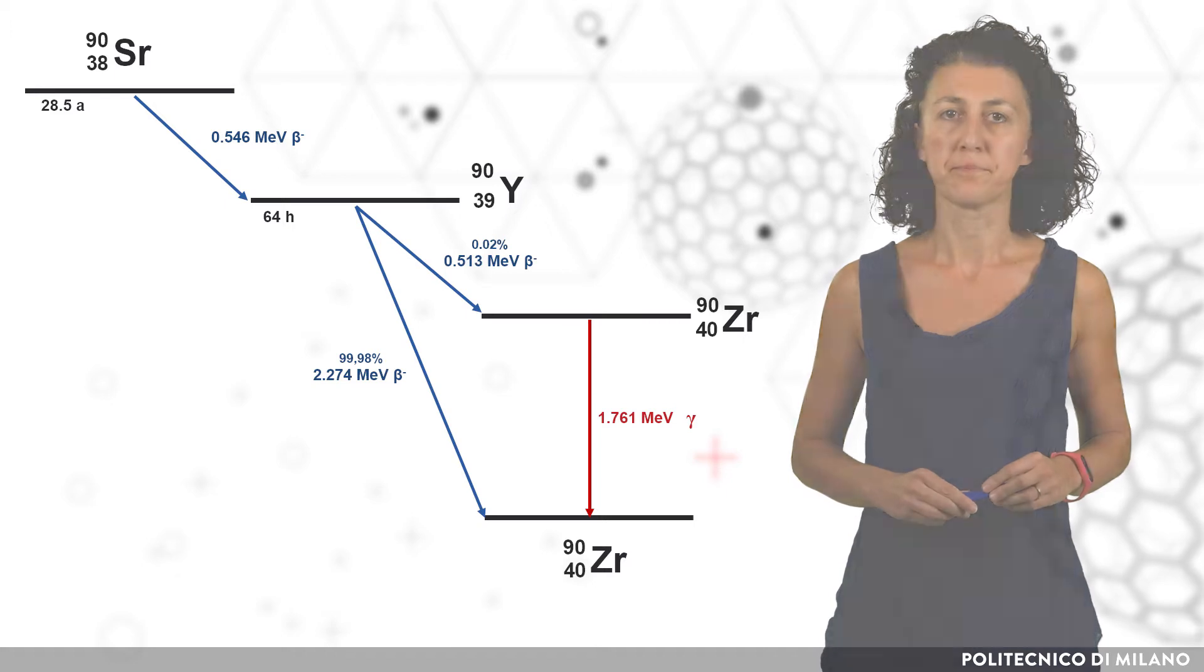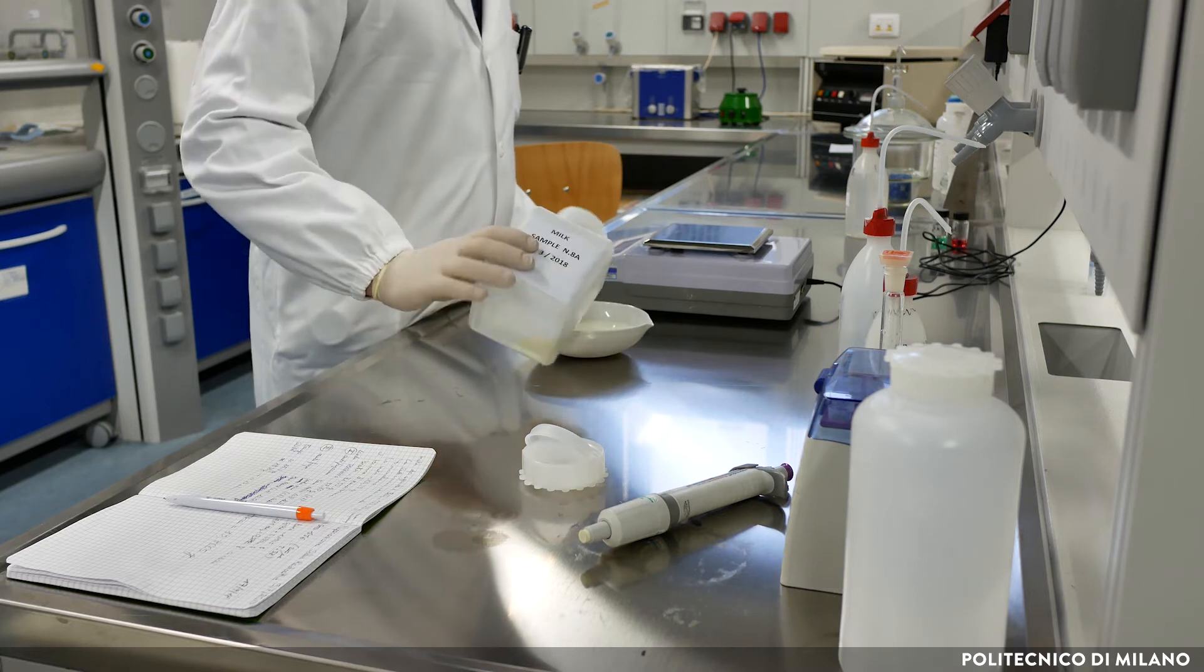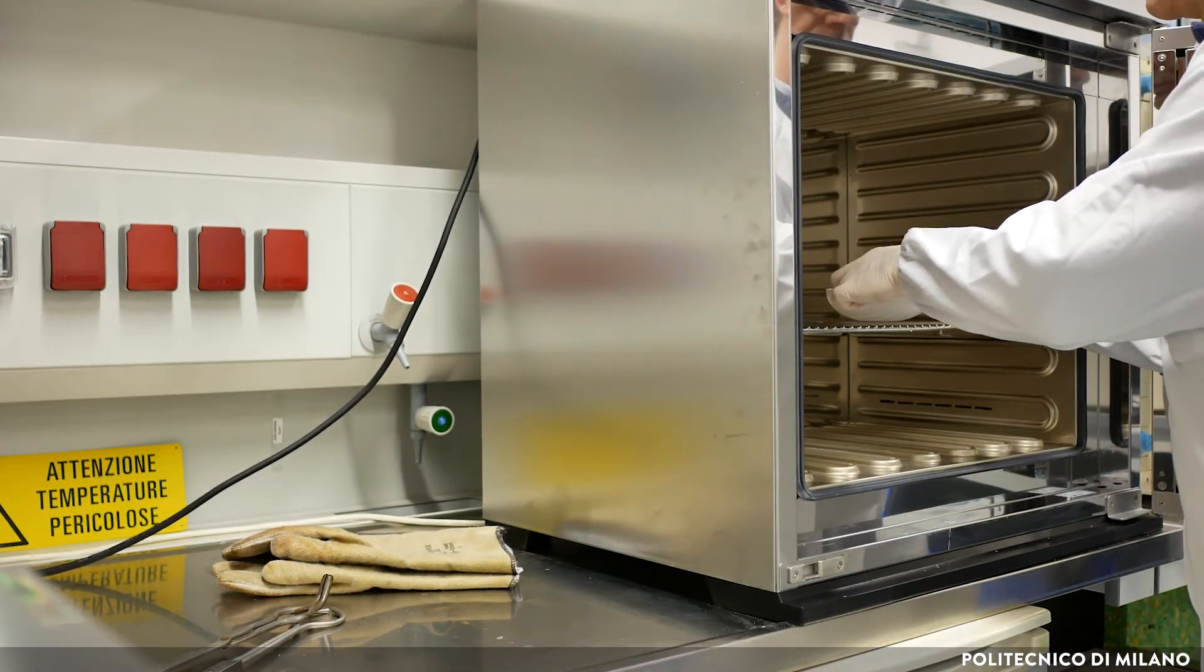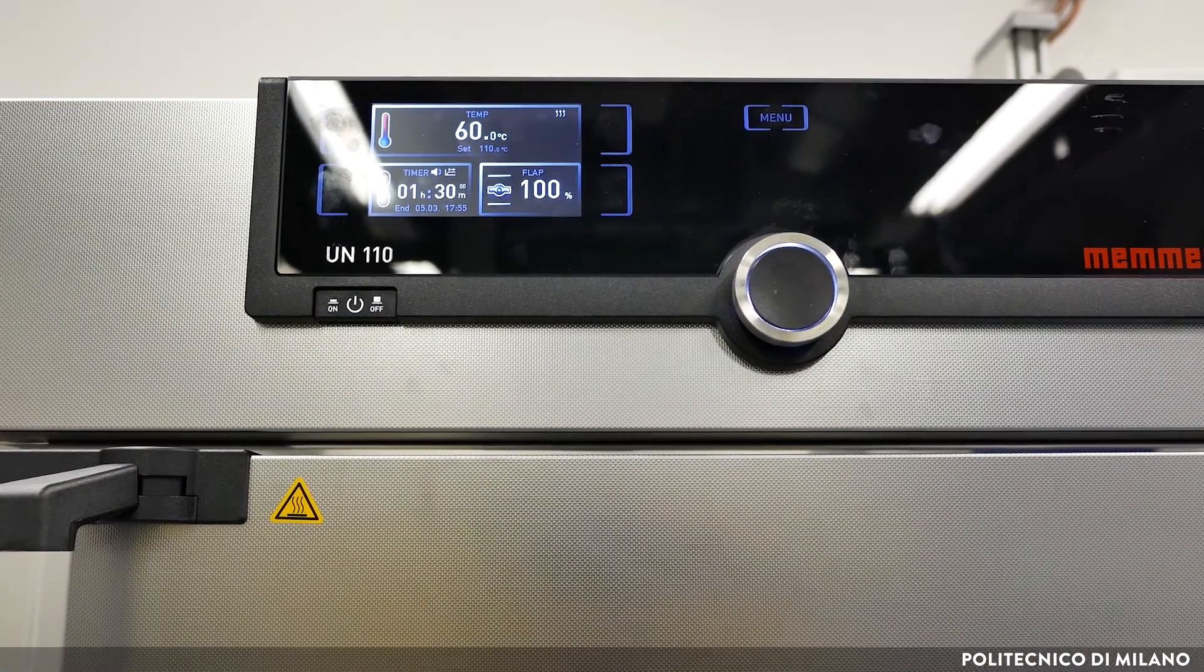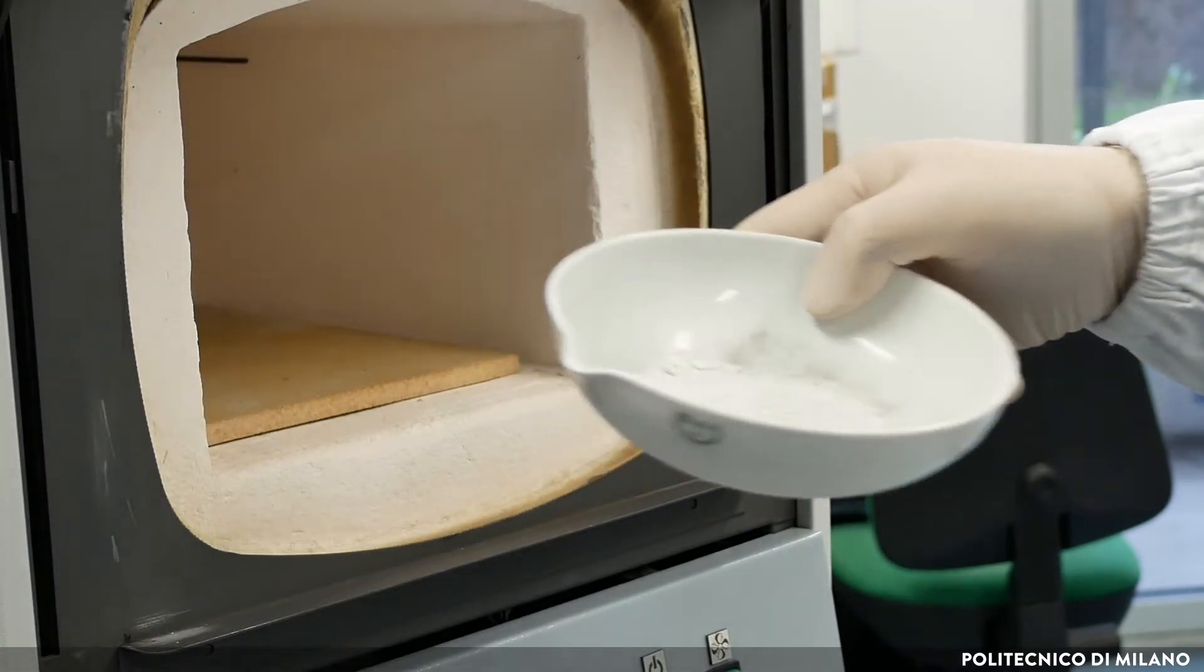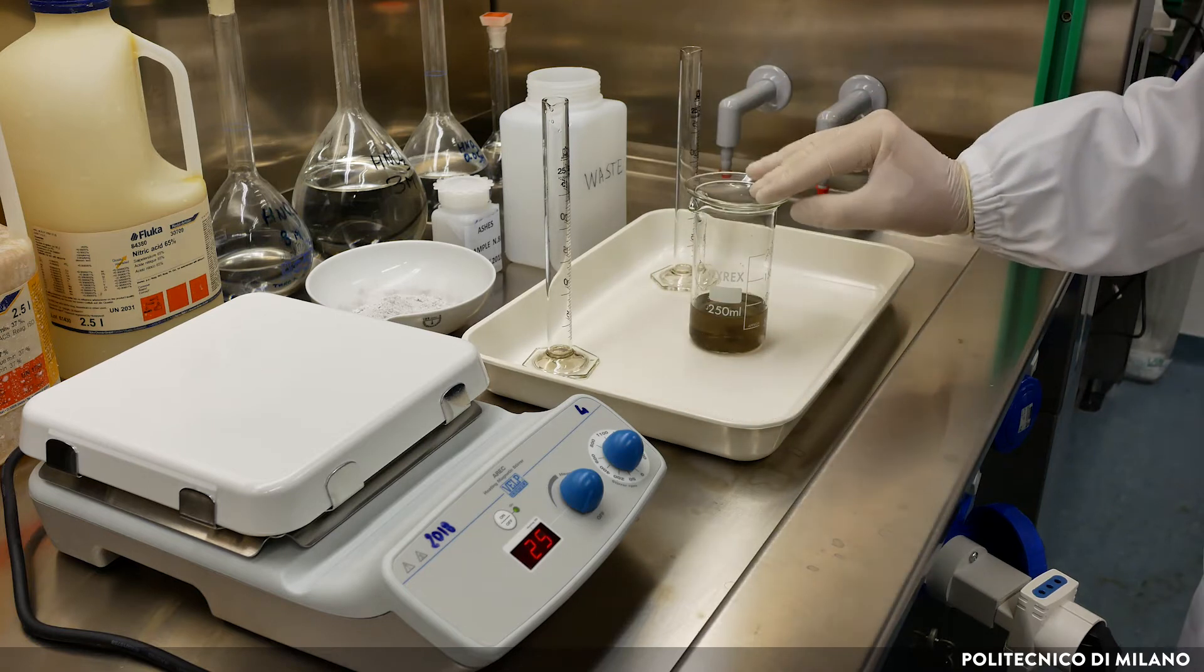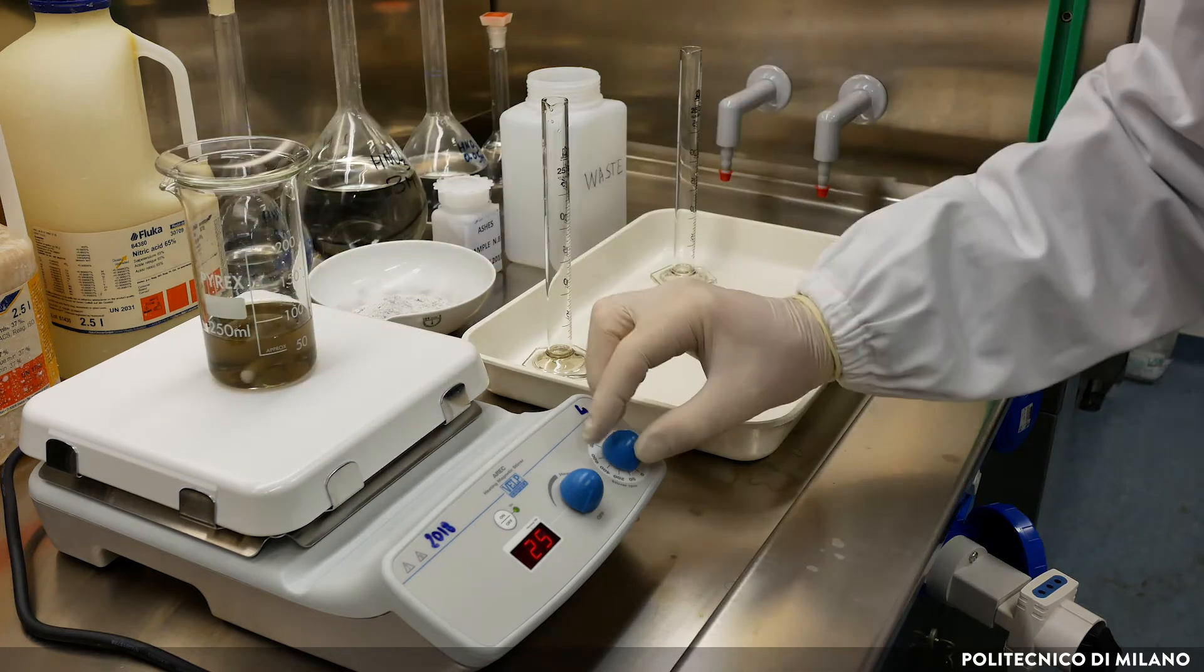In order to enable the quantitative measurement of the radionuclide, milk has to be chemically pretreated. A known mass of milk is dried in an oven at 110 Celsius degrees until it reaches a constant weight. Then the ashes are burned in an oven at 650 Celsius degrees for several hours. The potential strontium-90 present in the sample is leached from the ashes by a mixture of acids. The obtained solution is ready to undergo radiochemical separation.